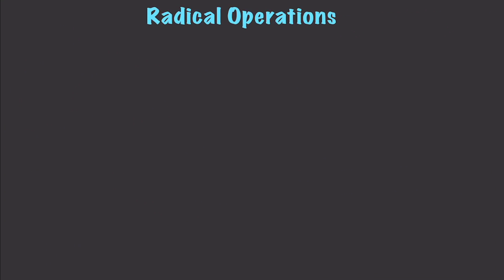Whenever you're dealing with radicals you can only add and subtract when the indexes and the radicands are equal. If you don't know what those things mean, watch the previous video where I talked about indexes and radicands. So let's say you have 3√x minus 4√x plus 8√x — this is going to work out to be 7√x. Pretty simple.